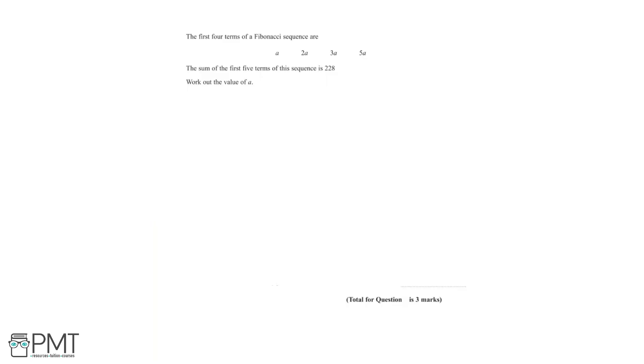In this question, we're told that the first four terms of a Fibonacci sequence are a, 2a, 3a, and 5a. We're then told that the sum of the first five terms of the sequence is equal to 228, and we need to work out the value of a.